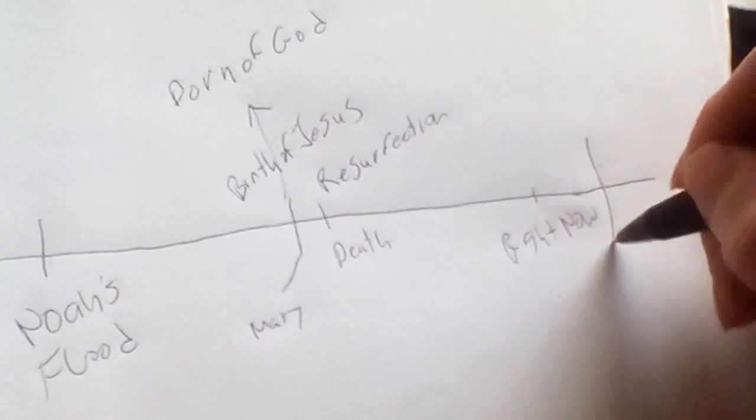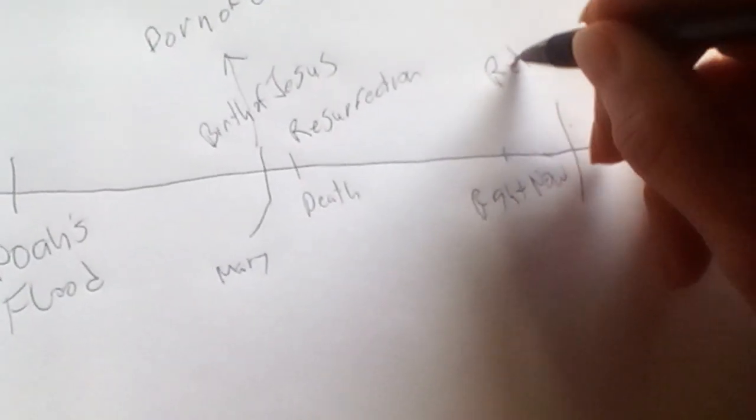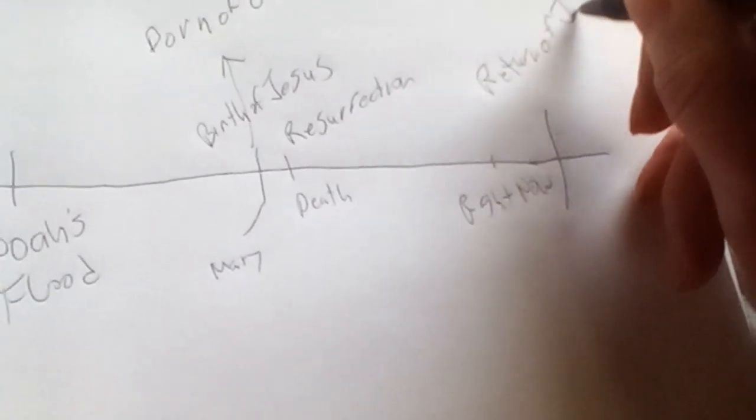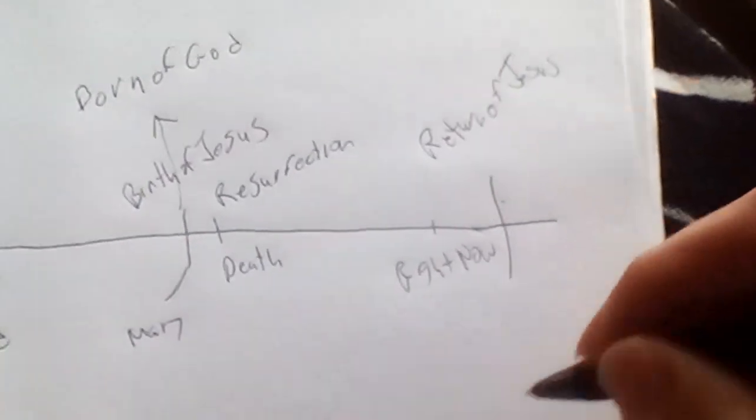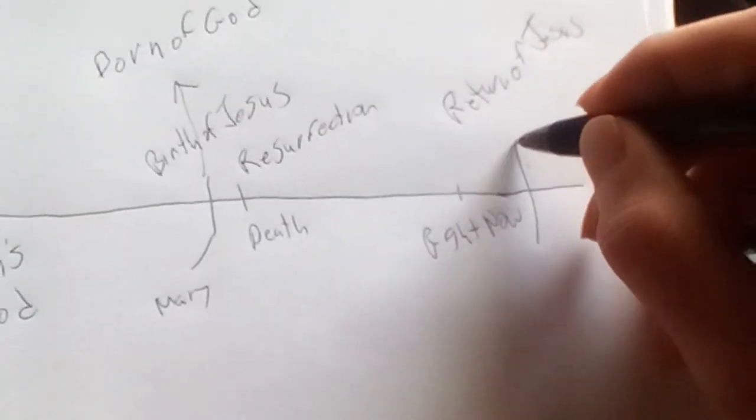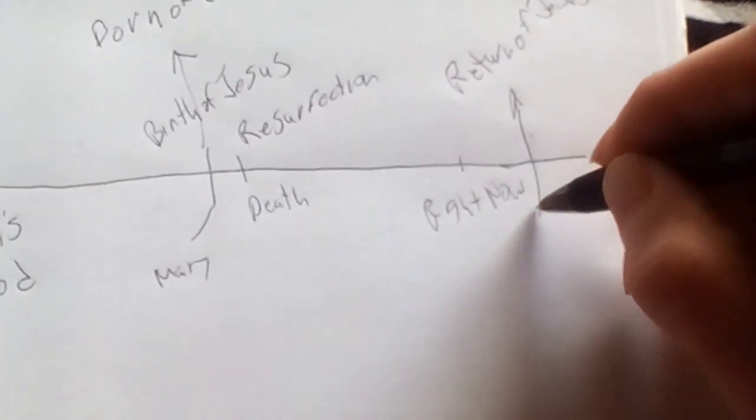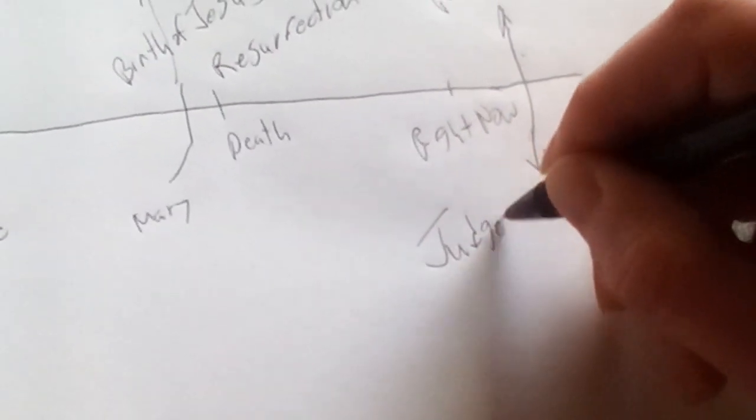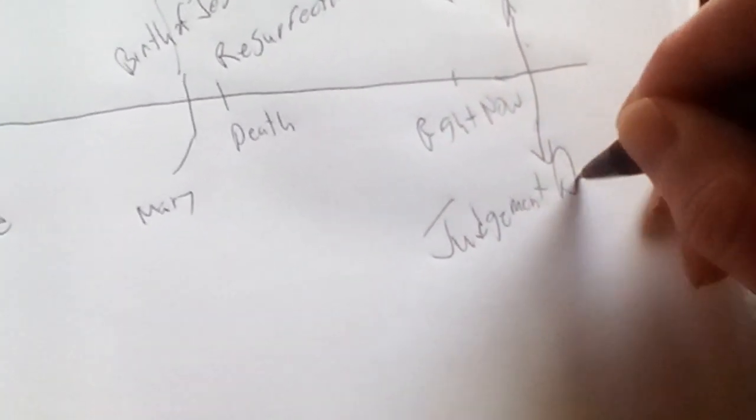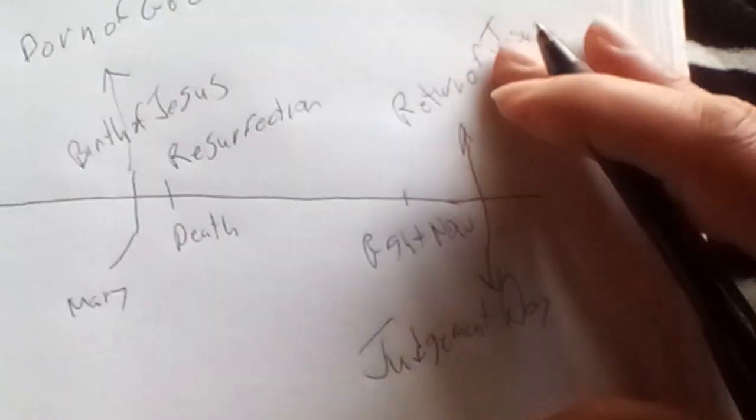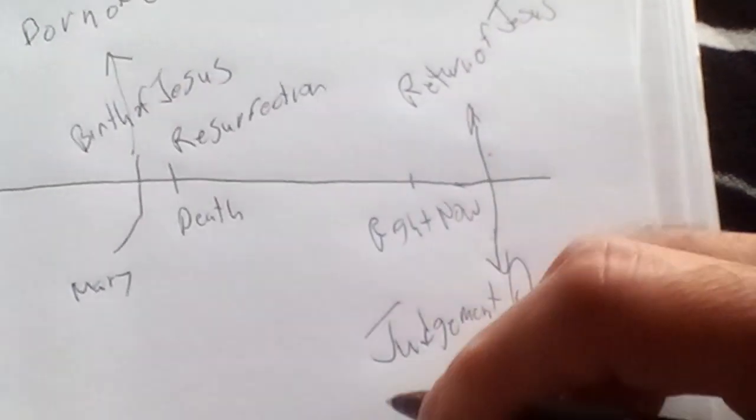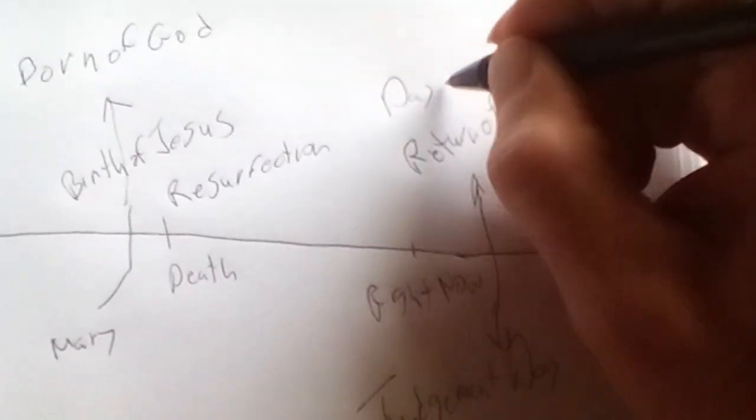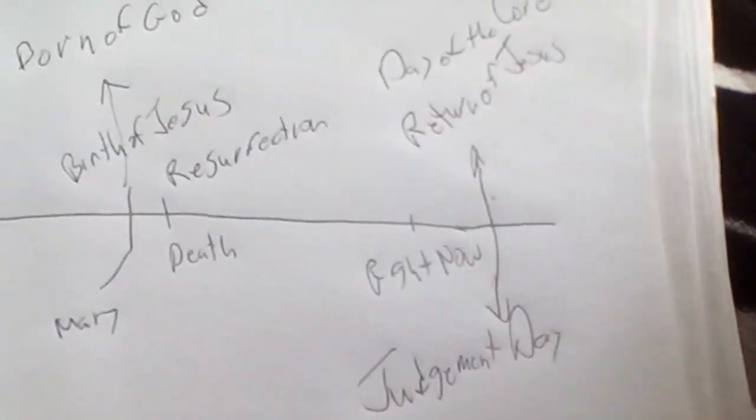And then we've got the return of Jesus. So this is important to know that the return of Jesus and judgment day is the same time. The return of Jesus, which is also the day of the Lord. This is when the sun will be darkened.